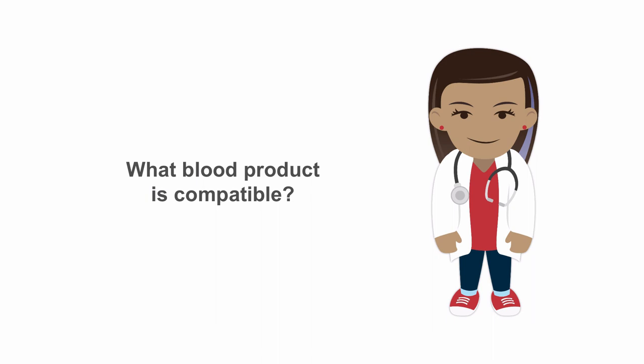In this lesson I want to help you to easily and quickly answer the question: what blood product is compatible with my patient's blood group? This will help you determine what products you can transfuse your patient. The underlying question you should ask is: will my patient have antibodies against the donor's red blood cell antigens that can cause hemolysis? Let's go through it step by step.